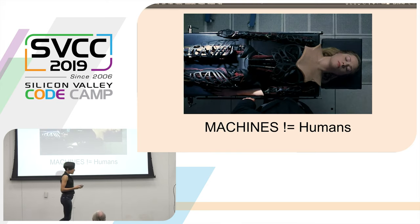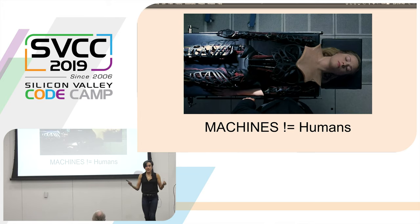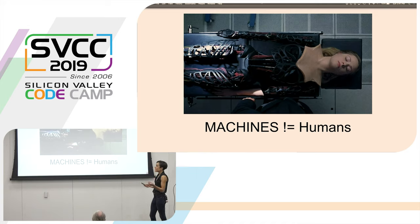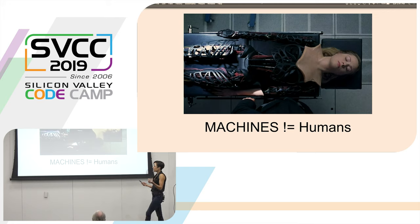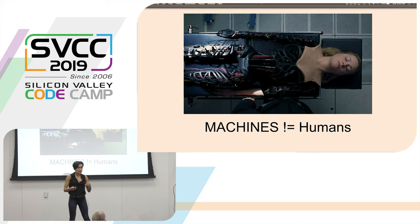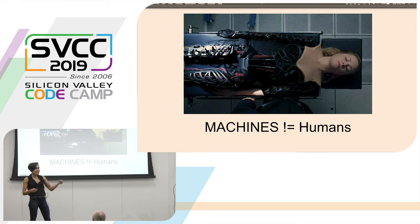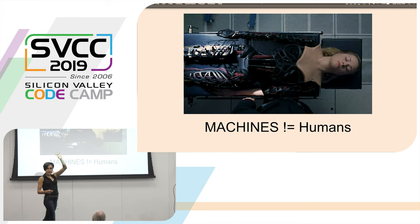Deep learning has propelled us to new levels of performance, thanks to the deep learning revolution. However, as we'll see, these models can still make mistakes that look absurd to us individuals. We still have yet to reach AGI — that artificial general intelligence that everyone keeps talking about.